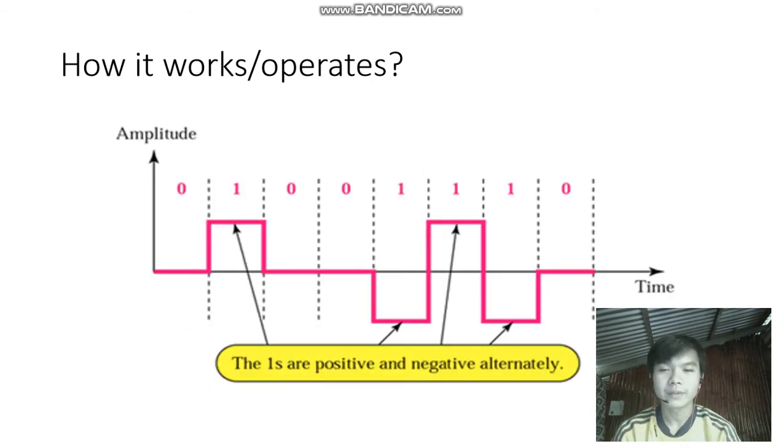So how it works or operates. This is how AMI works. It is represented by these pictures. The ones are positive and the other one becomes alternating and it is negative. So its polarity depends on ones. Its polarity becomes alternating when ones are repeated. So we can see the first one is the positive one. Then the two zeroes are here and the next one becomes the negative. Then the third one becomes positive because it came from negative. Then the next one becomes negative and so on.